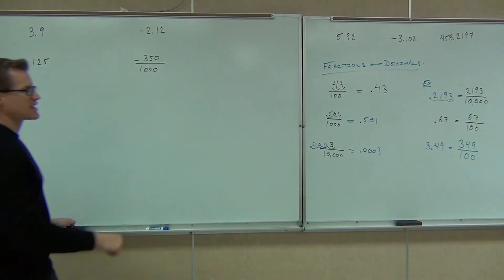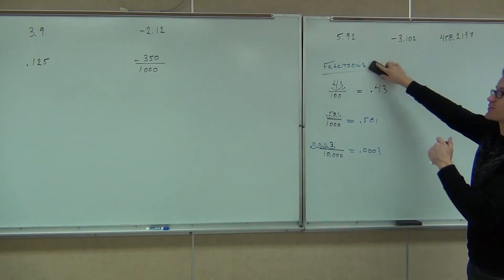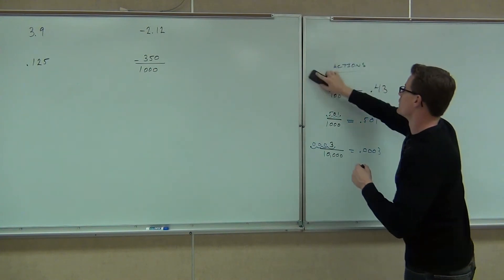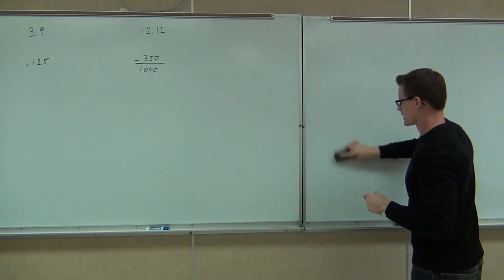So we've got three decimals to change into fractions and only one fraction to change into a decimal. And I also put some negatives up there. Are the negatives going to hold you back at all? No. They're just going to stick along with those problems. It's not going to really change much.